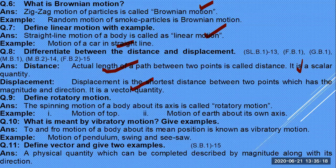Distance vs displacement: distance is the actual length of the path between two points — it is a scalar, measured in meters. Displacement is the shortest distance between two points — it has magnitude and direction, so it is a vector. Rotatory motion: spinning motion of a body about its axis, e.g., a spinning top or Earth rotating about its axis.